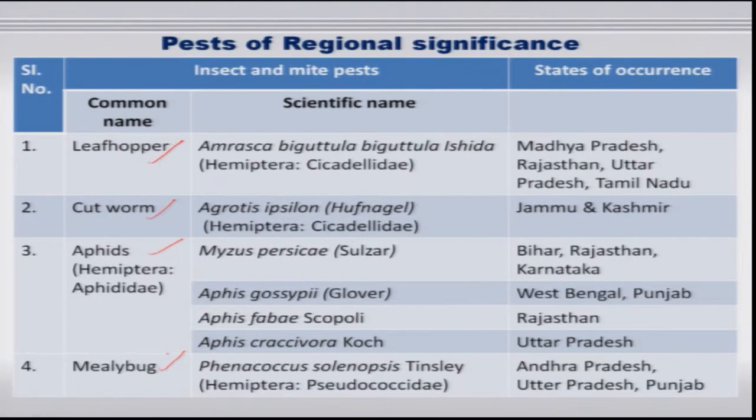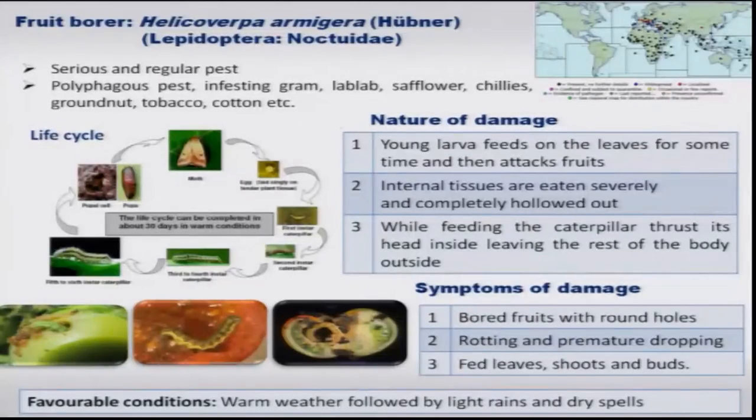We will understand the significance of these pests, their life cycle, the nature of damage, the symptoms they produce, the conditions which favor these pests, and the integrated approach needed to combat them. First, let us take the fruit borer, Helicoverpa armigera.